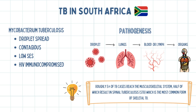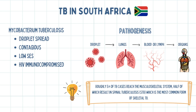When the body's immune system can no longer fight the infection, TB can enter the bloodstream to infect other parts of the body, known as extra-pulmonary TB. TB reaches the musculoskeletal system by hematogenous or lymphatic spread in roughly 5% of cases, half of which results in spinal tuberculosis, which is the most common form of skeletal TB.